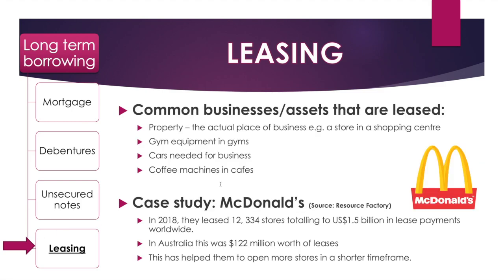Common examples of business leasing include the actual property — such as a store in a shopping center. Gyms often lease out their gym equipment, and when the lease ends, upgrade to new equipment. Many businesses lease cars, and cafes often lease their coffee machines — those large industrial-size machines are quite expensive, so for a startup cafe that represents a significant cost. In terms of McDonald's, in 2018 they leased over 12,000 of their stores worldwide, paying around $1.5 billion in lease payments — just in Australia that was $122 million.